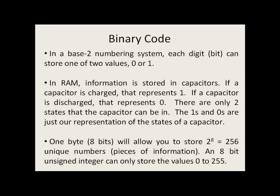So as we've discussed, in a base-2 numbering system, each digit—or we can also call that digit a bit—can store one of two different values, 0 or 1.